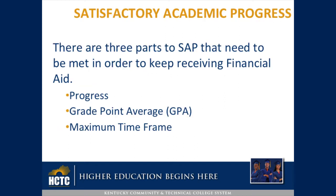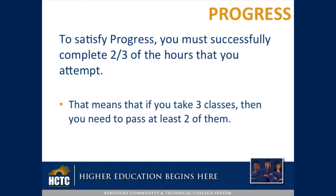There are three parts to SAP that need to be met in order to keep receiving financial aid: Progress, Grade Point Average, and Maximum Time Frame. To satisfy progress, you must successfully complete two-thirds of the hours that you attempt. That means that if you take three classes, then you need to pass at least two of them.